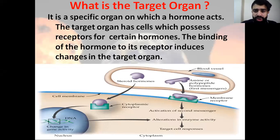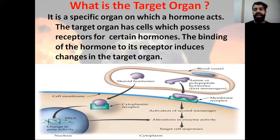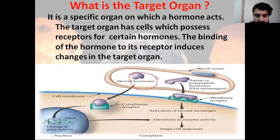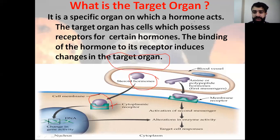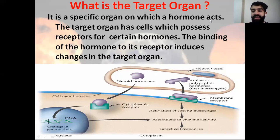What is a target organ? The target organ is a specific organ on which hormones can act. The target organ has cells that possess certain receptors for certain hormones. The binding of the hormone to its receptor induces a change at the level of the target organ — either a structural or functional change.